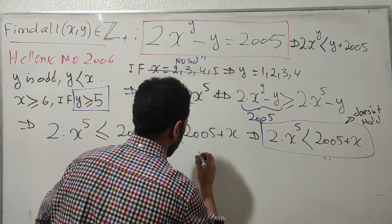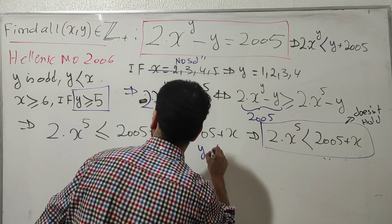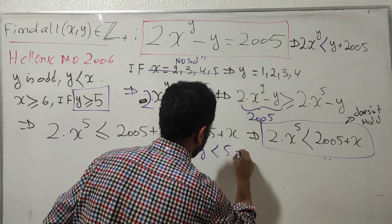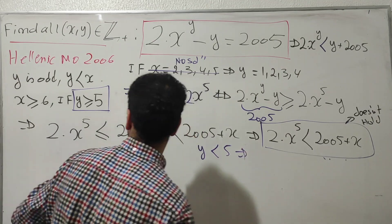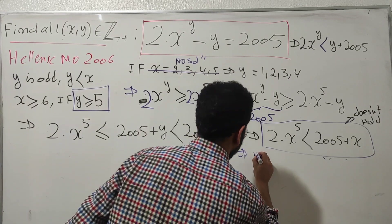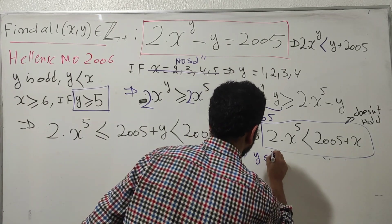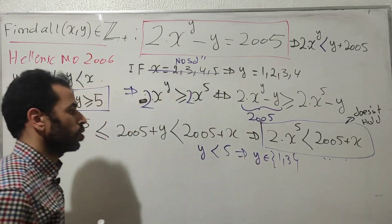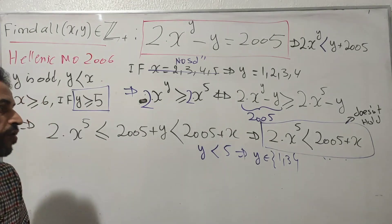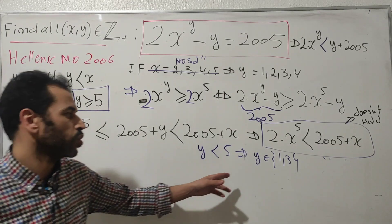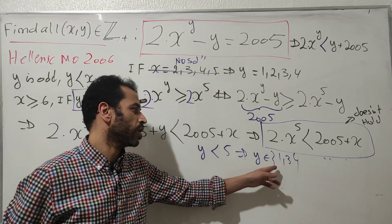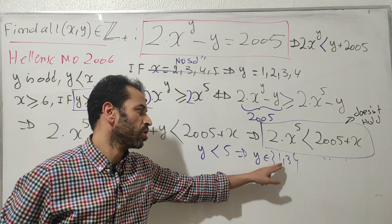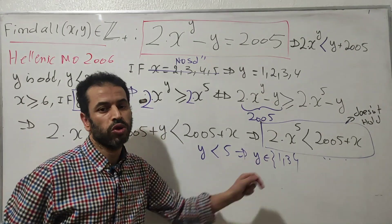Therefore y must be strictly less than 5. Since y is odd, y belongs to the set {1, 3}. The only thing left now is to check which of y = 1 or y = 3 gives a valid solution.